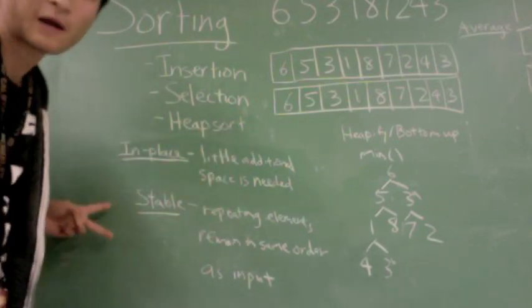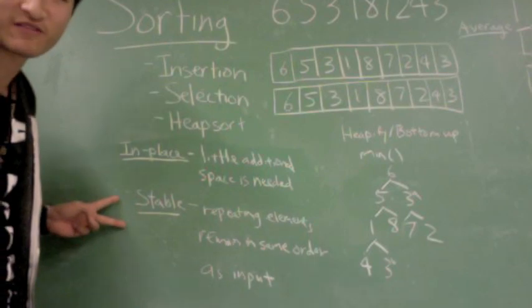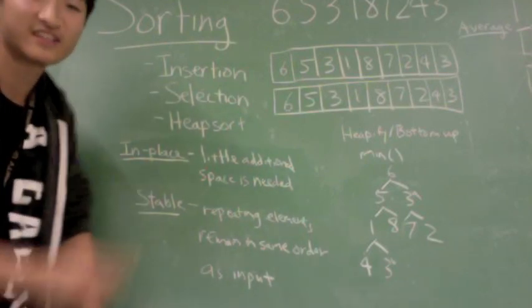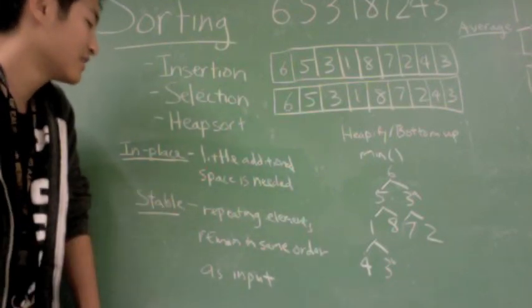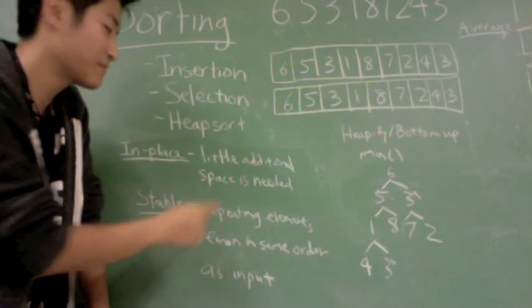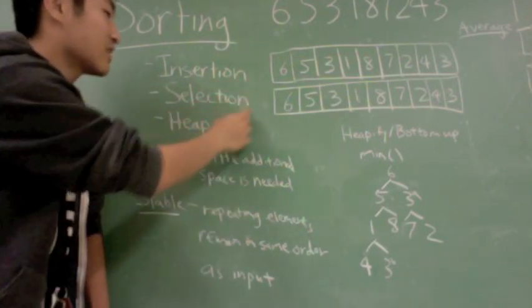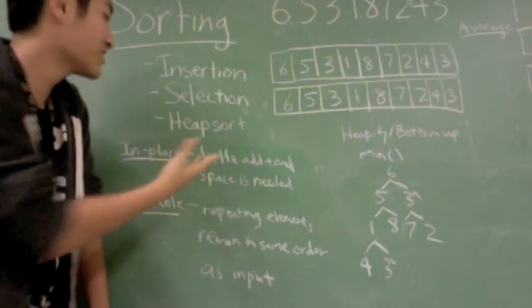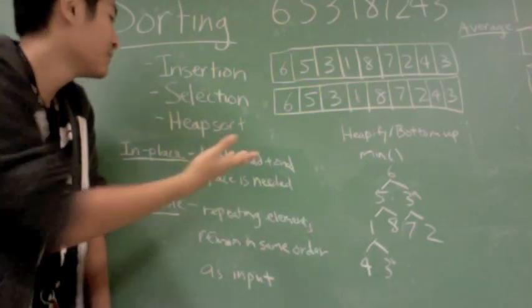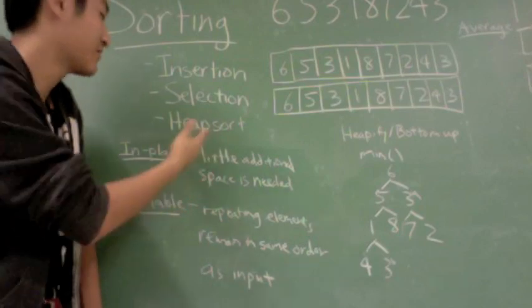Two properties that we might be really interested in for sorting algorithms: one, is the sorting algorithm in place? An in-place sorting algorithm is one where little additional space is needed. These three that I'll be talking about are actually in-place algorithms, so that's a great benefit.